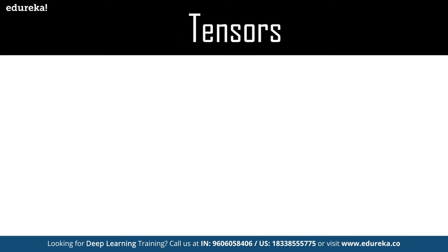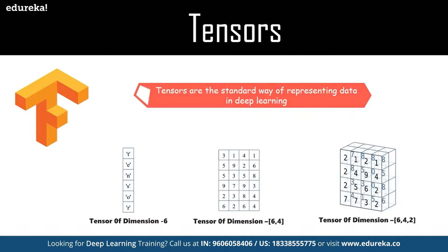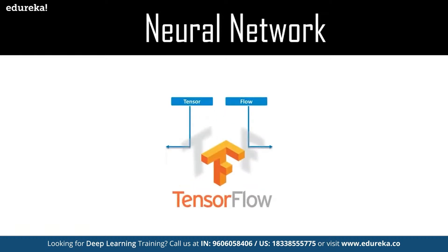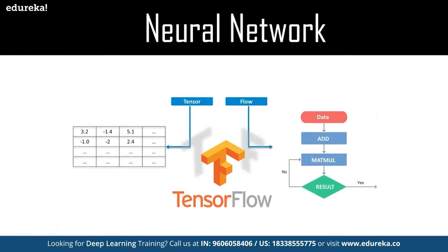The name TensorFlow is directly derived from its core framework. In TensorFlow, all computations involve tensors — a tensor is a vector or matrix of n dimensions that represents all data types. All operations are conducted inside a graph, which is a set of computations that take place sequentially. Each operation is called an op node. TensorFlow allows developers to create dataflow graphs describing how data moves through a series of processing nodes, where each connection or edge between nodes is a multi-dimensional data array, or tensor.